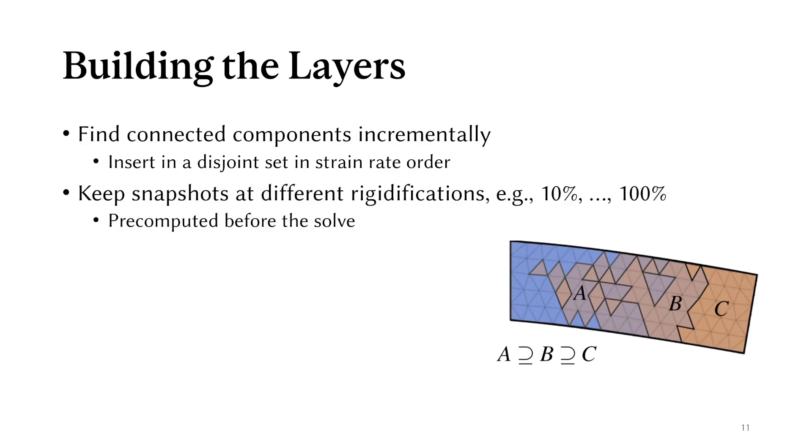We keep snapshots of the adjacency at different percentages of rigidification during the insertion in disjoint set. This way we can cheaply capture the connectivity of our layers. This can all be pre-computed before the solve, but needs to be done once per step because the strain rate changes over time.